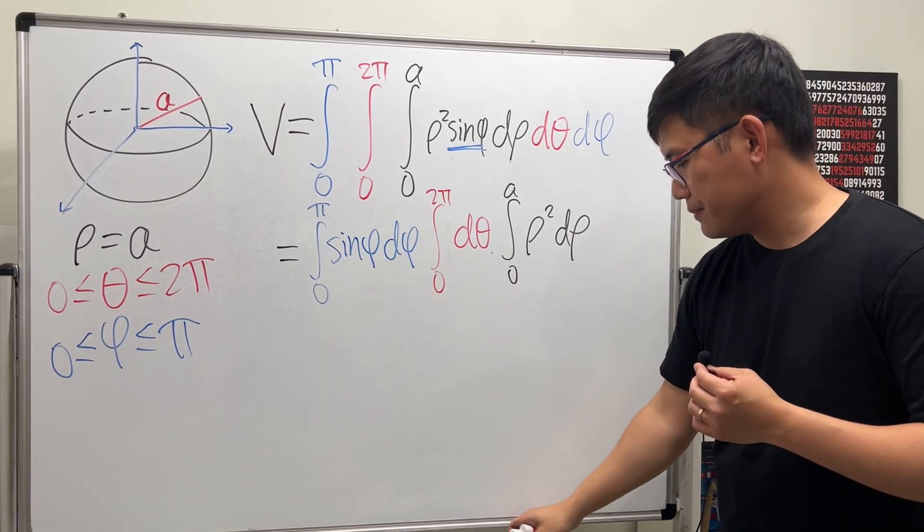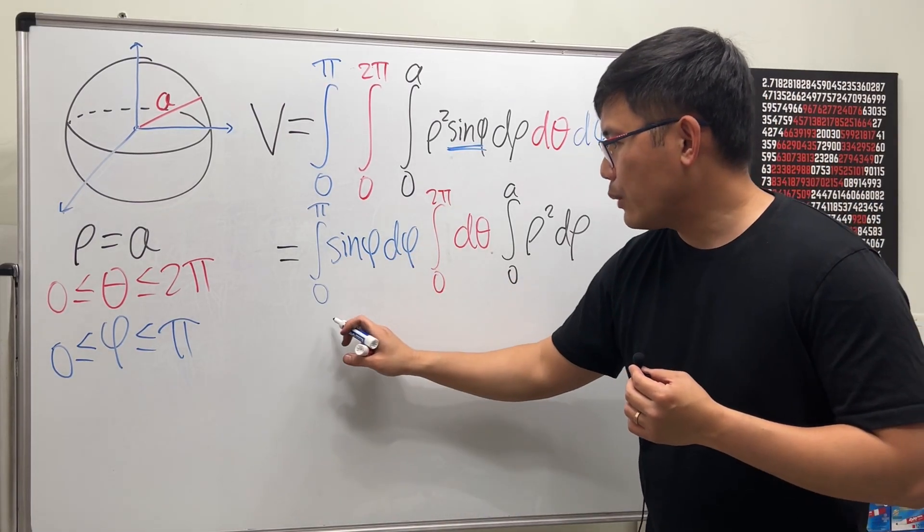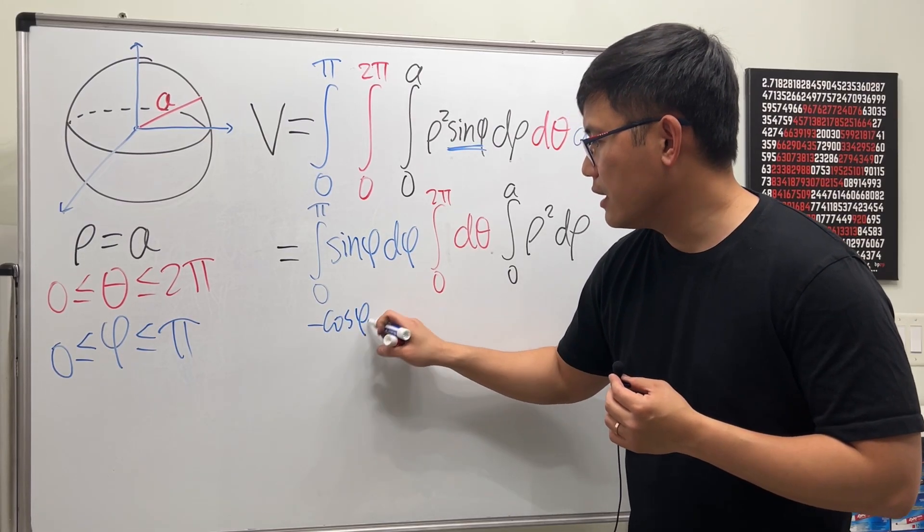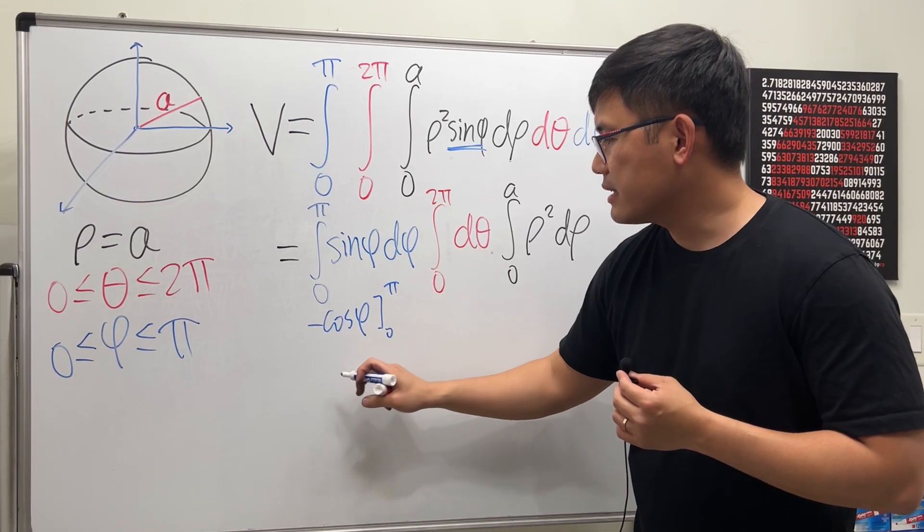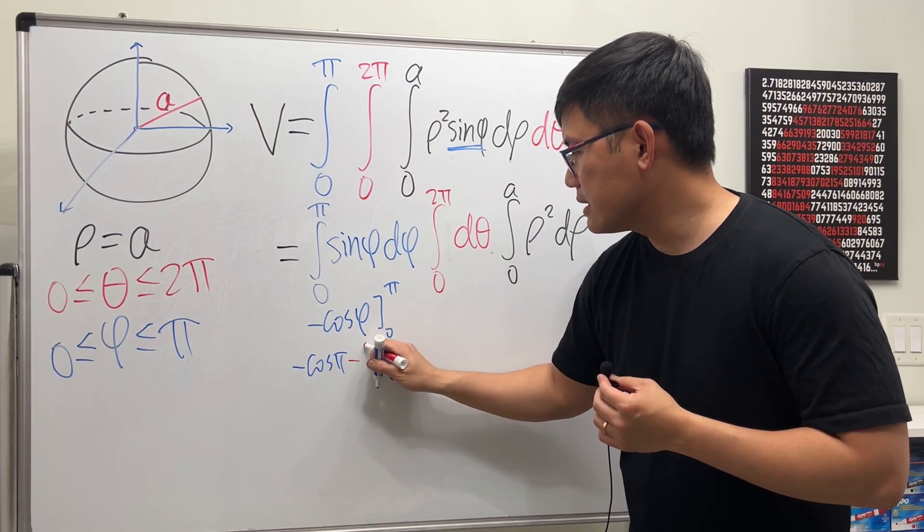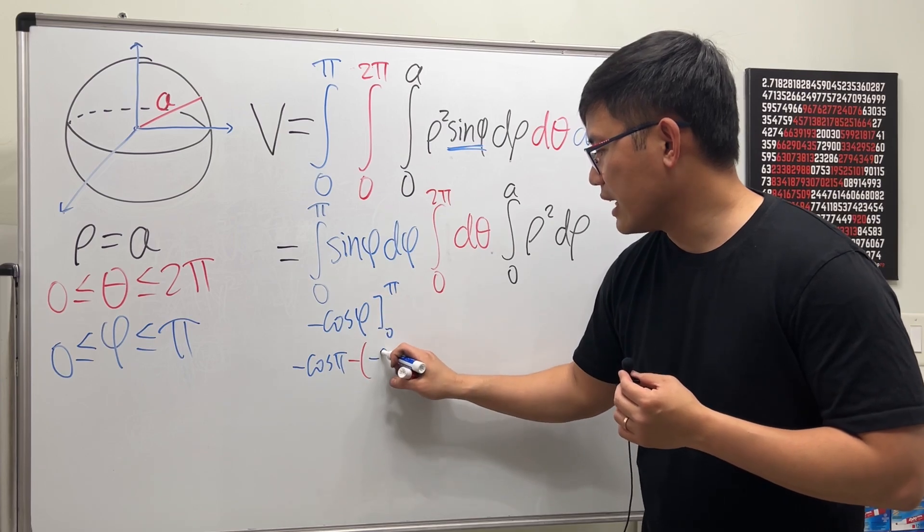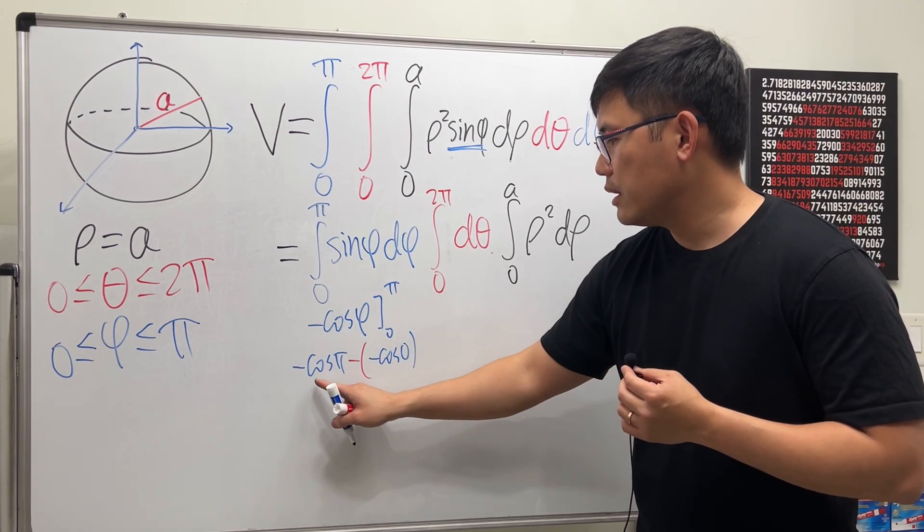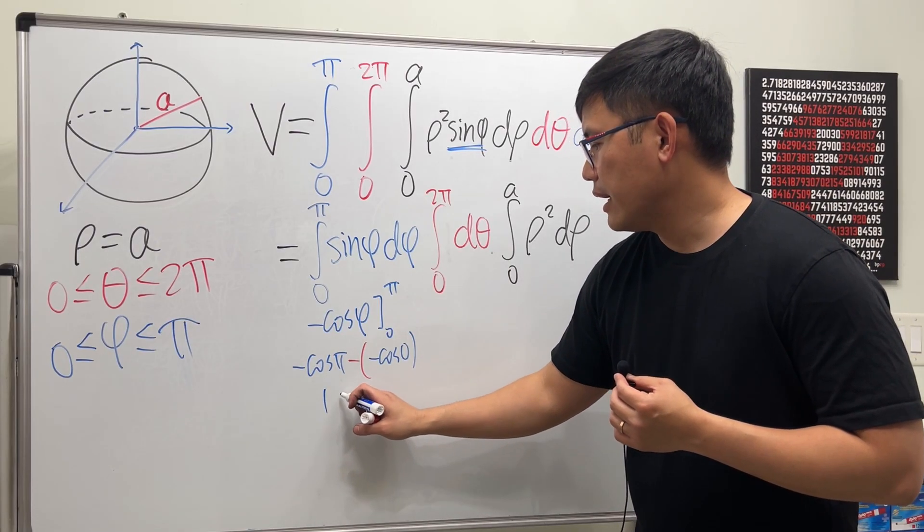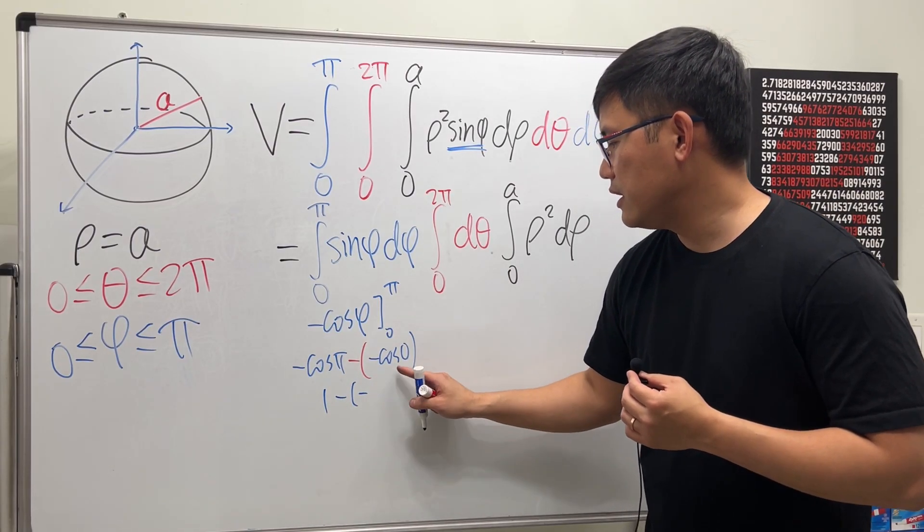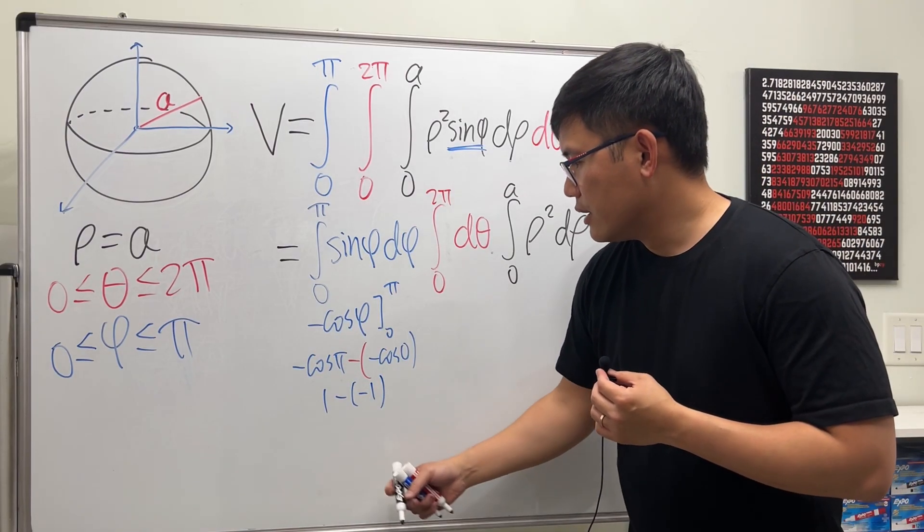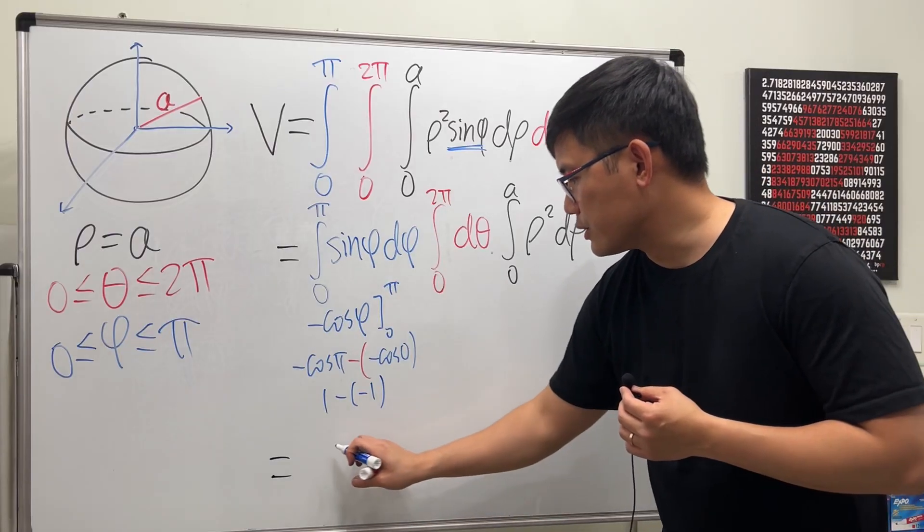So just work this out first. So I will have the integral of sin φ being negative cos φ. And then we go from 0 to π. Plug that in, we get negative cos π, and then minus negative cos 0. cos π is negative 1 times negative 1 is positive 1. And then minus negative cos 0 is 1. So it's 1 plus 1. So the result for the blue one is 2.